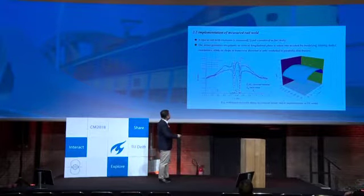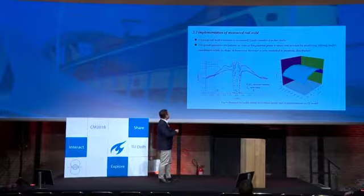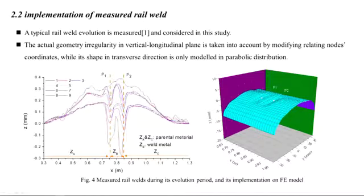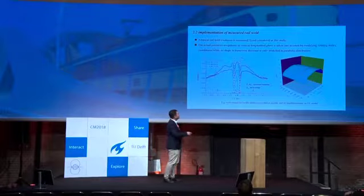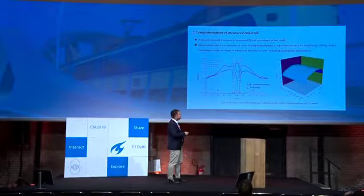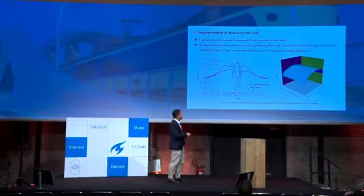This picture shows the measured real-world weld geometry considered in our model. The actual geometry irregularity is incorporated by modifying the relating nodes of the rail surface. This figure shows the three-dimensional distribution of a specific irregularity.